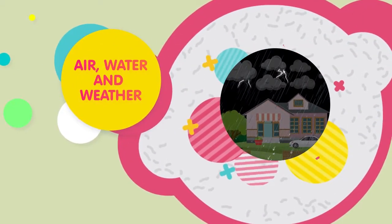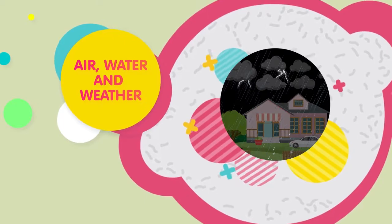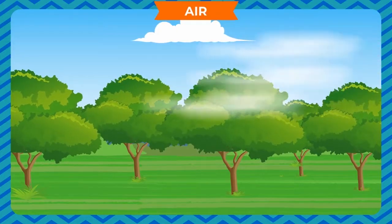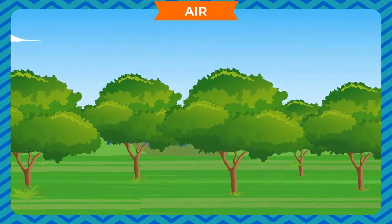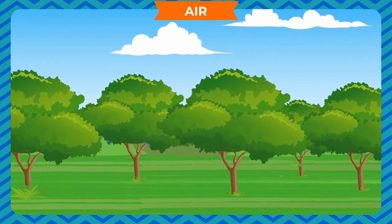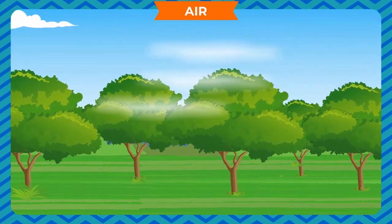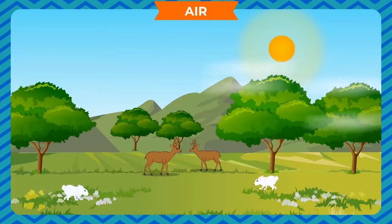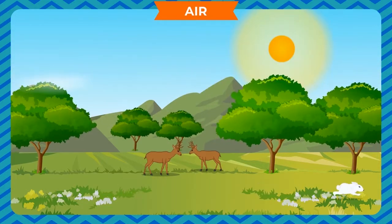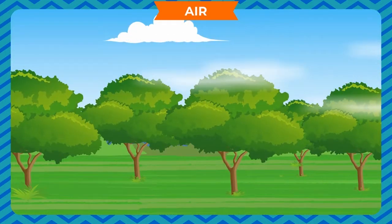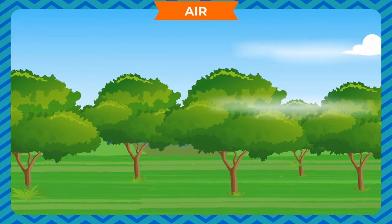Air, water and weather. Air is around us. Although we cannot see it, we can feel it when it blows. When air blows or moves, it is called wind. When the wind blows gently, it is known as breeze.